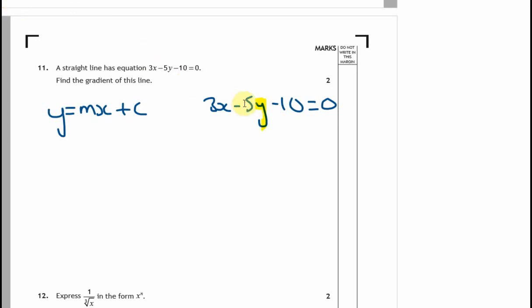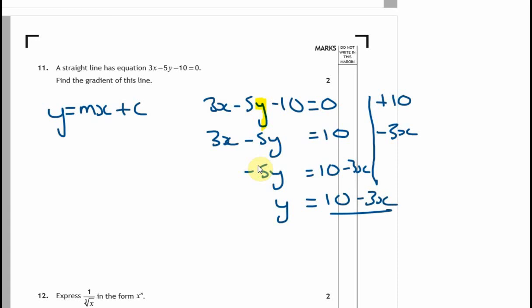Whenever we're rearranging, we always start with the numbers furthest away from the thing we're looking at. First we need to move over the minus 10 and the 3x. I want to move over minus 10, so if I get rid of a minus on one side I'll add plus 10. That's going to give me 3x minus 5y equals 10. Then I want to get rid of plus 3x, I'm going to take 3x away. Minus 5y equals 10 minus 3x. How do I get rid of minus 5? I'm times by minus 5, so I need to divide by minus 5.